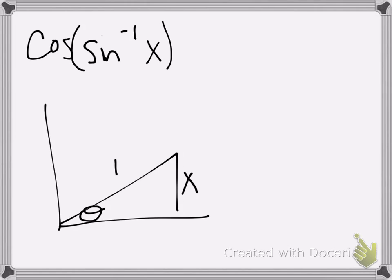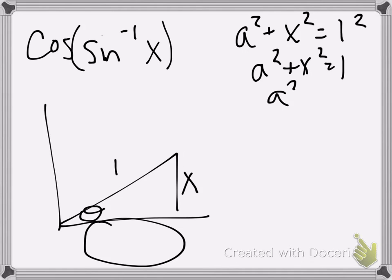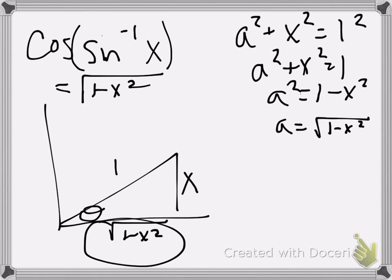Since I need cosine, I'm going to have to figure out what this adjacent side is. I'm going to use my Pythagorean theorem again. a squared plus x squared equals 1 squared, or a squared plus x squared equals 1. I will solve for a squared first, and then take the square root. a is the square root of 1 minus x squared. That's what I'm going to put in right there in that missing spot. Now that I have the triangle solved, I can figure out the cosine. Adjacent, square root of 1 minus x squared, over 1, or just the square root of 1 minus x squared.